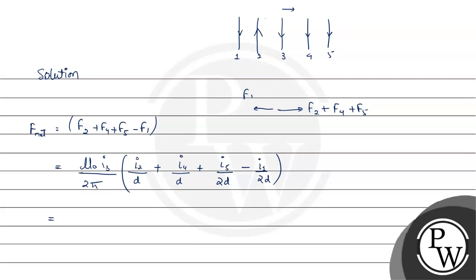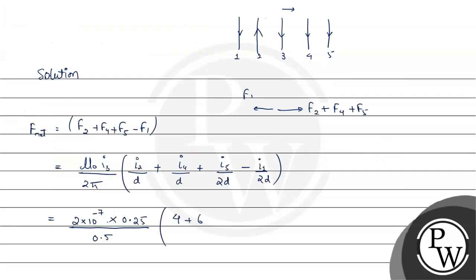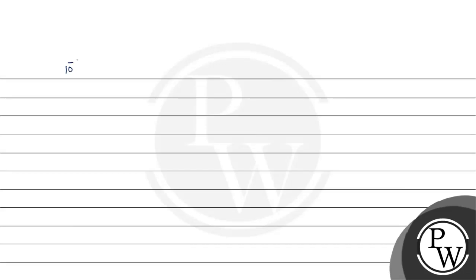So it will be equal to mu0 upon 2 pi, which can be written as 2 into 10 to the power minus 7. I3 is given to us as 0.25. D is also taken as common, so it will be 0.5 meters. Now inside the bracket, I2 is given to us as 4, I4 is given to us as 6, I5 is given to us as 2 amperes, so it will be 2 upon 2, minus I1 is given to us as 2 upon 2. So solving this, we will get 1 here and 1 here and they will cancel each other out because they are in minus. So now 2, 0.25, and 0.5 will cancel each other out, and hence this will come out to be equal to 10 to the power minus 7 into 10, which is 10 to the power minus 6 newtons per meter.